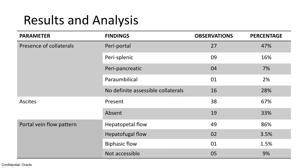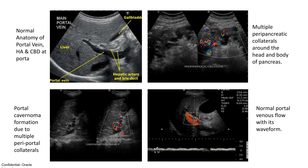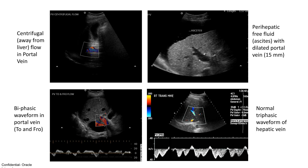The majority of portal vein flow patterns were hepatopetal at 86%. These images illustrate normal portal vein anatomy, portal cavernoma, multiple peripancreatic collaterals, and a normal portal venous flow waveform. Other images show centrifugal portal vein flow, a biphasic waveform in the portal vein, perihepatic free fluid, and the normal triphasic form of the hepatic vein.